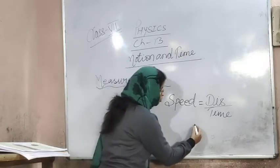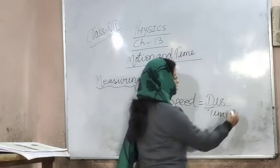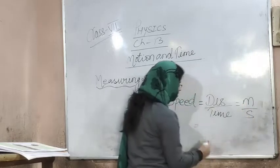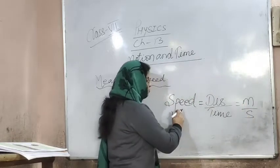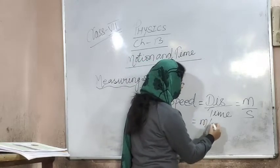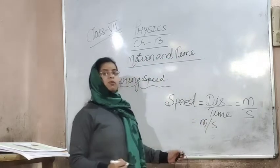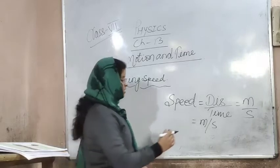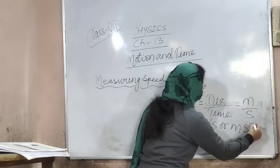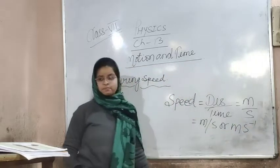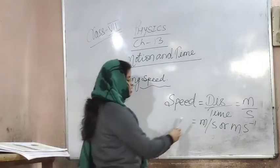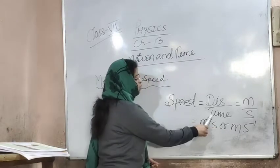For example, you will know what the distance units are. Distance unit is meter, and time unit is second. So distance divided by time gives speed, and the unit is meter per second. You can write meter per second as m/s or as m s⁻¹. This is the speed unit, and this is how we measure speed.